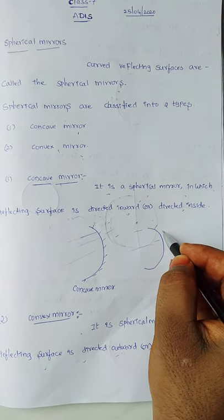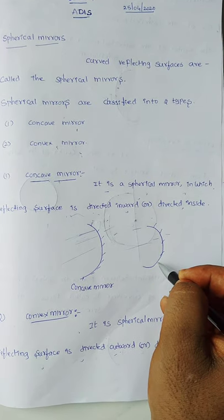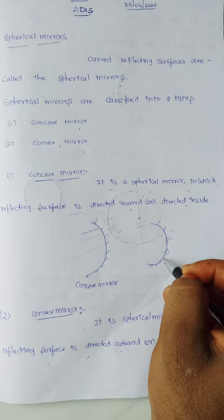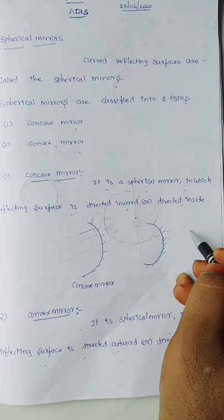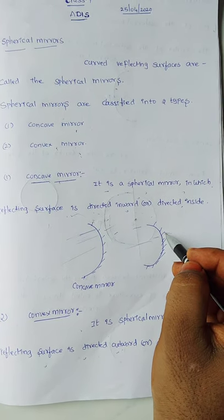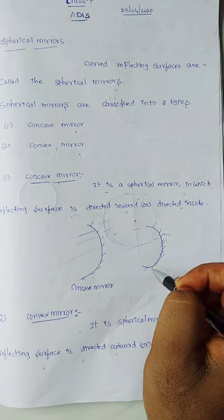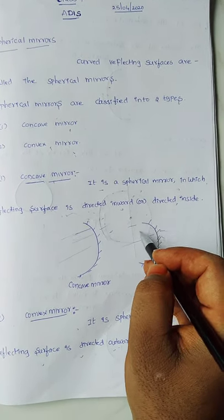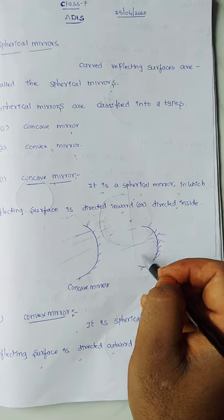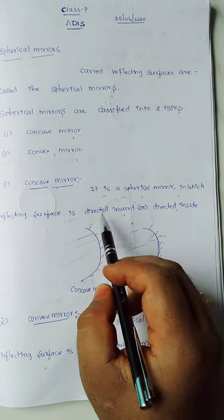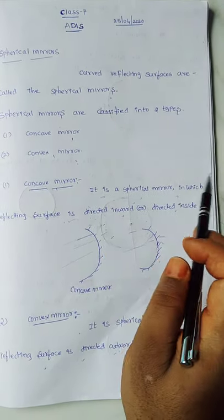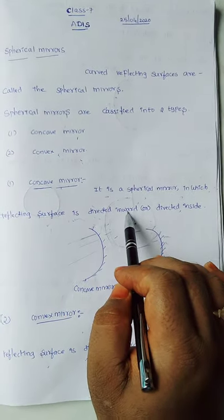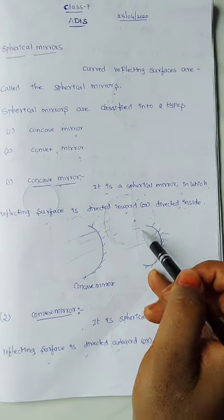For the concave mirror, the dotted line on the outside represents the silver-coated surface. On that silver-coated side, light does not pass and is not reflected. But on the inside surface, it is a reflecting surface. So concave mirror is a spherical mirror in which the reflecting surface is directed inward or directed inside.